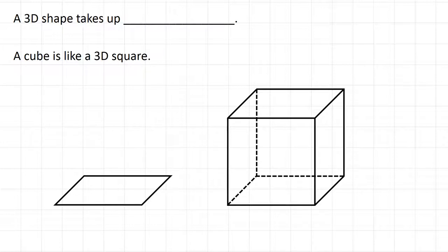So a 3D shape is not flat. A 3D shape takes up space. For example, a piece of paper is like two-dimensional. You can just stick it on a desk and it doesn't make the desk any bigger.